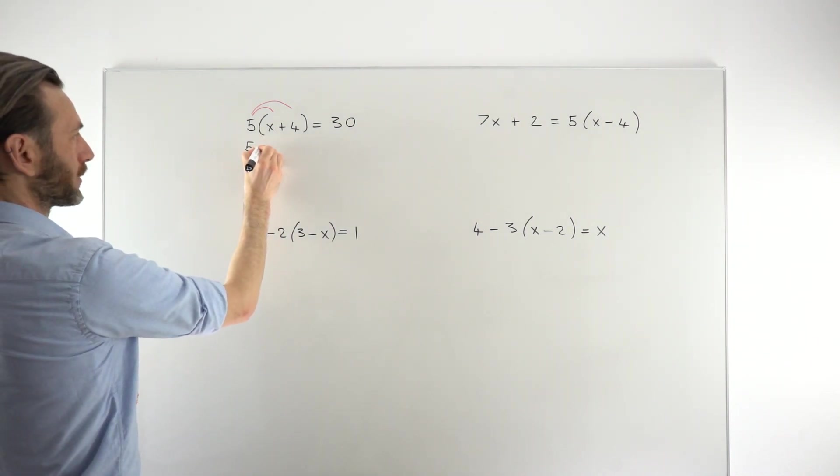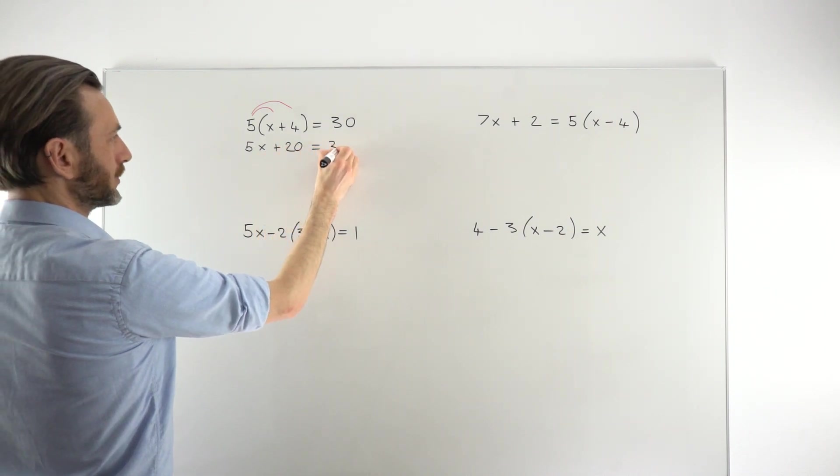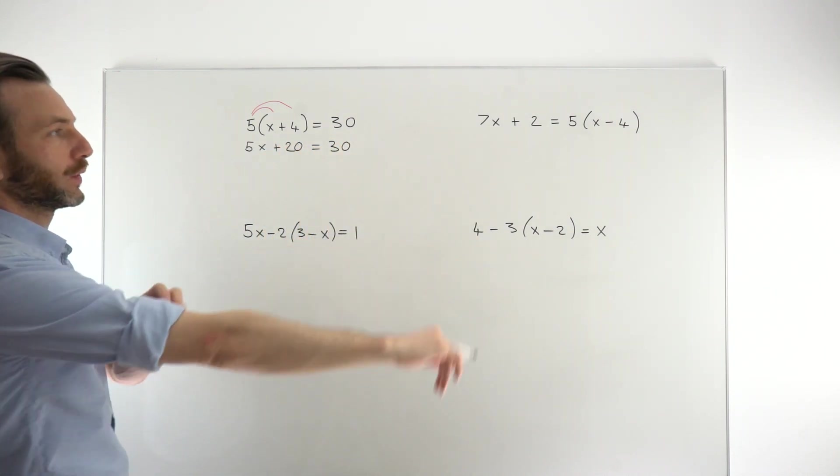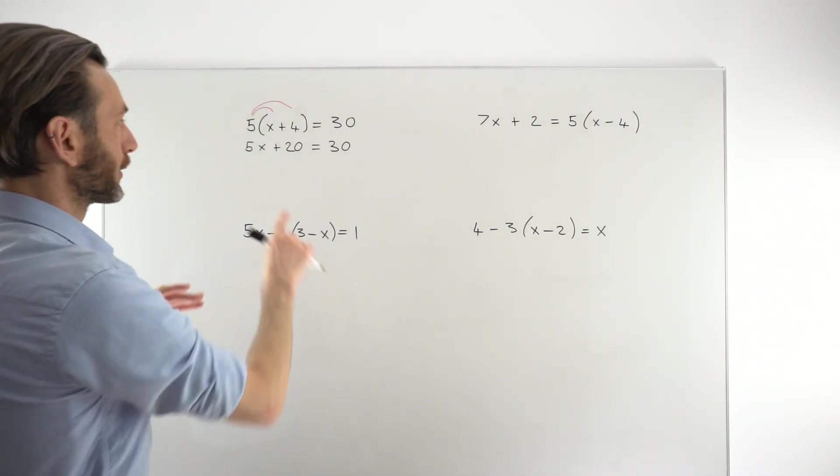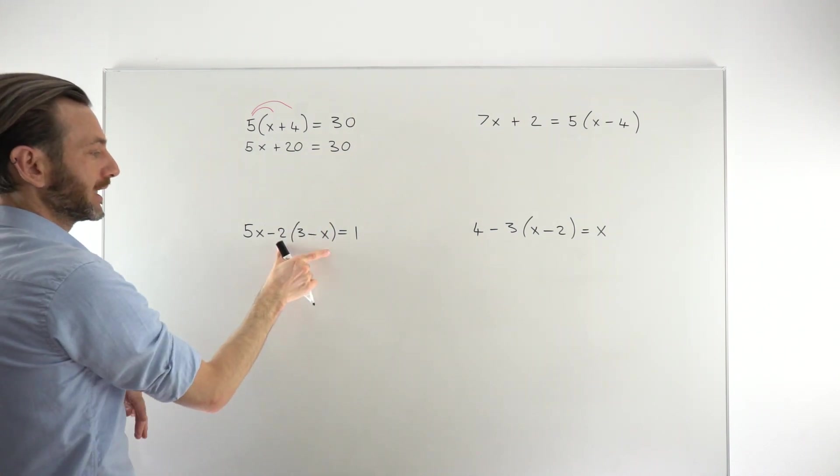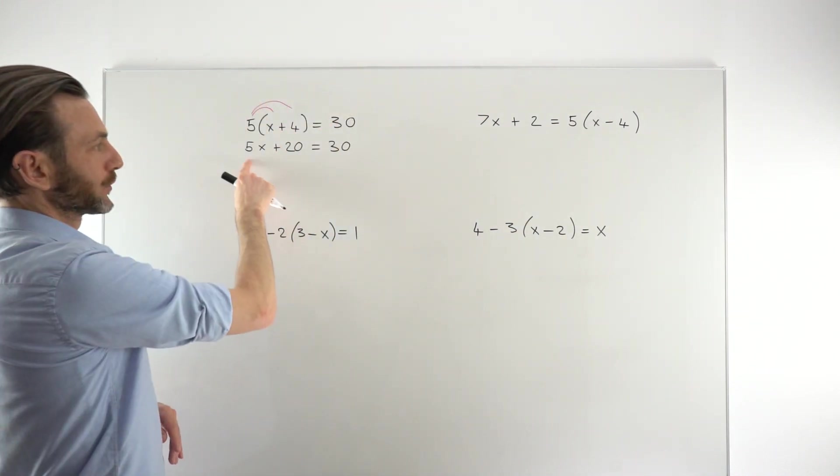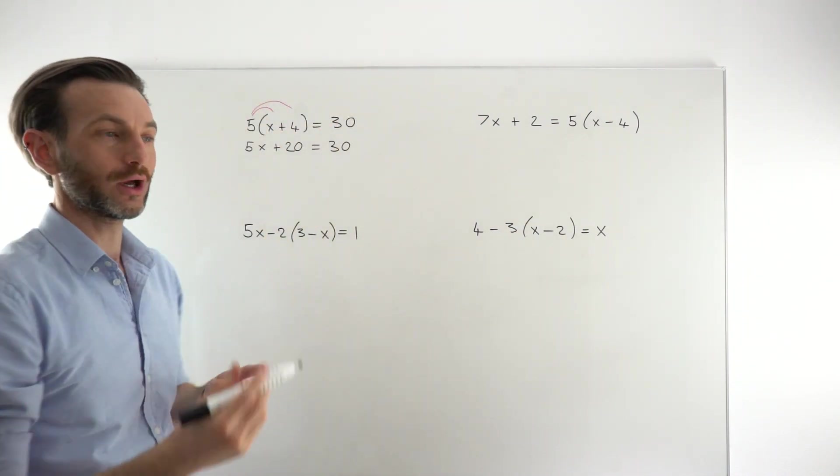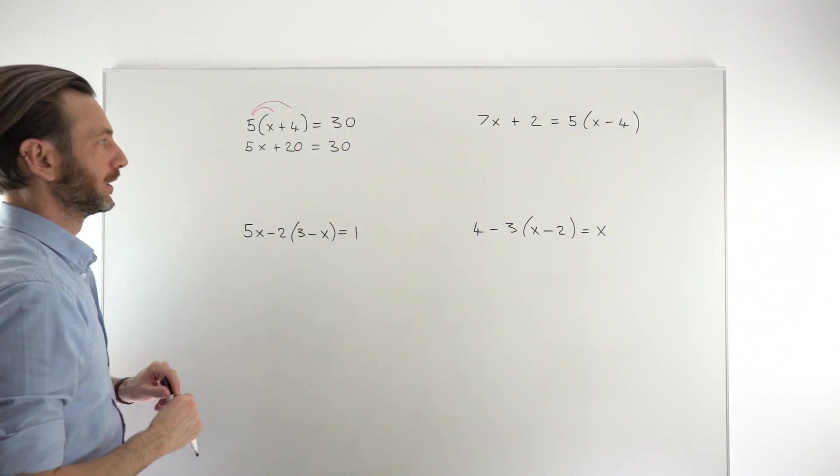So 5 times x is 5x. 5 times 4 is 20. And now this has just turned into a normal linear equation. I'm going to assume in this class you're already familiar with the basics of solving linear equations. We're dealing only in this class with particularly the cases where you've got brackets to deal with. If you're not sure how to solve a linear equation, then check out the previous class, the class that introduces you to that technique, and then come back into this one.